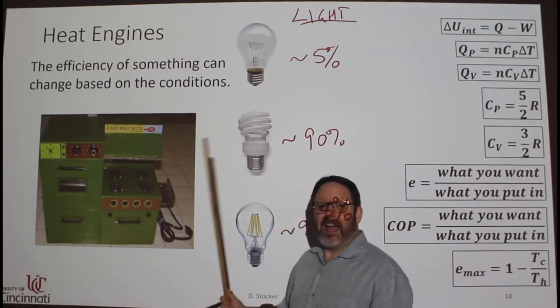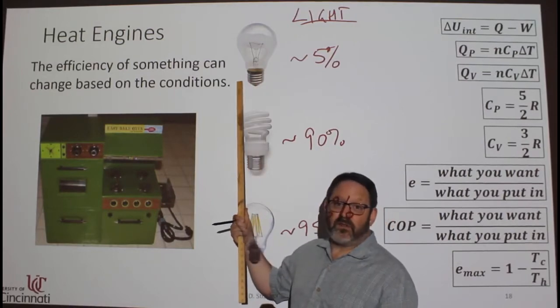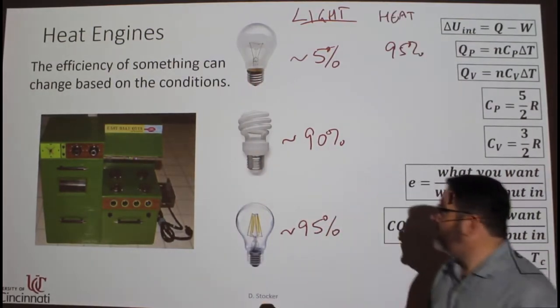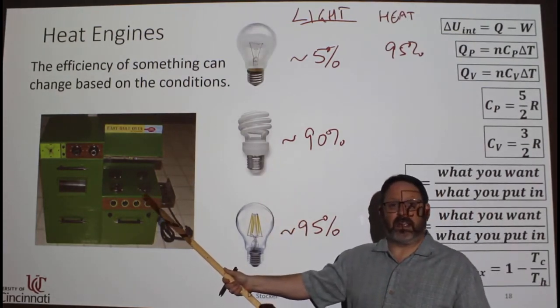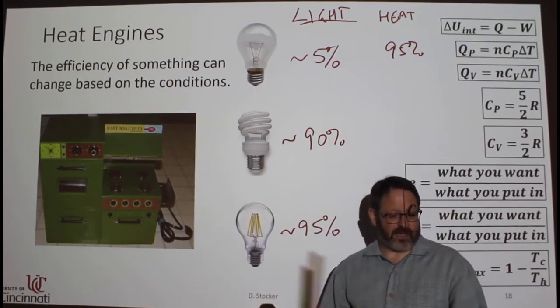So if I'm looking at how much heat does it produce, this light bulb is no longer 5% efficient. Now it's 95% efficient. If I put this in, it would be terrible at baking the cake. It would probably never bake. This one would certainly never bake a cake.